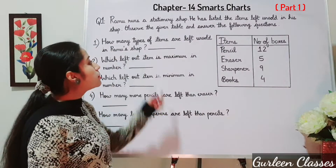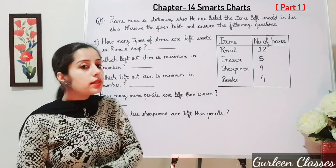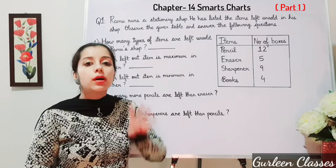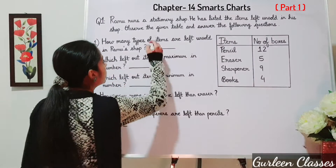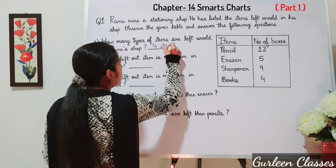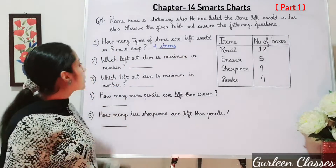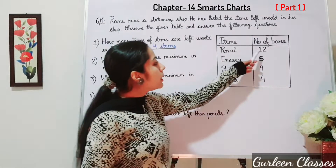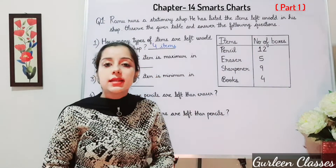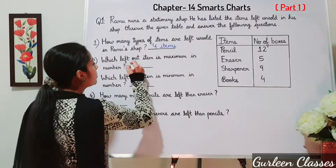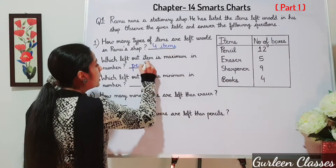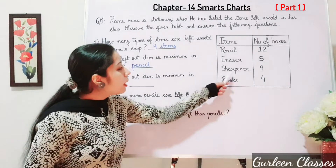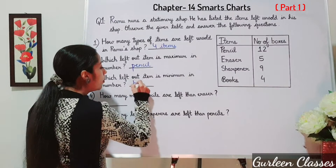Question number 1: How many types of items are left unsold in Ramo's shop? Four items. Which item is maximum in number? Pencil — it is 12. Which left-out item is minimum in number? Books.